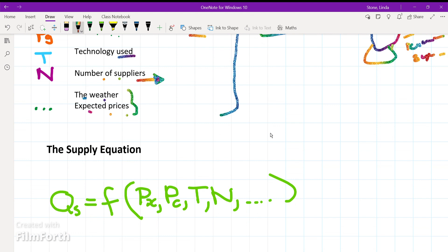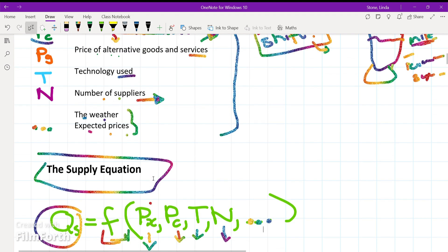We can put all of this in a supply equation. The quantity supplied is a function of Px, which is the price of the good, like chickens. Then the cost of production or the price of inputs, then technology, and the number of firms. These three dots mean other factors. So the quantity supplied is a function of these specific factors.